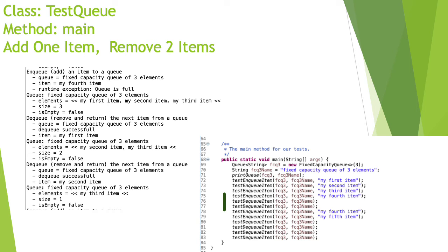The fourth element is not added, so the queue remains with three elements. Then we dequeue one element and get the first element, because it was the first one added. The queue now contains only the second and third items. If we dequeue again, we get the second item.